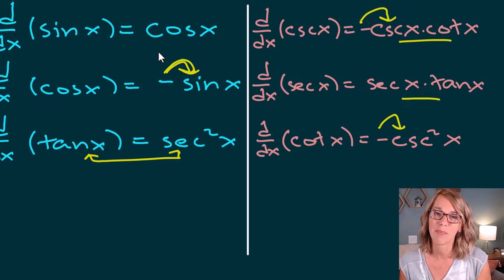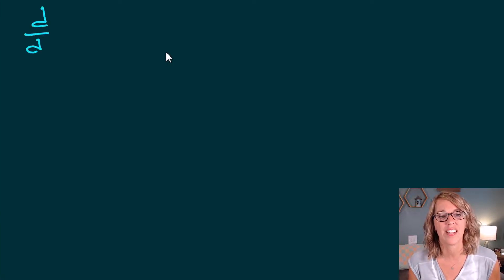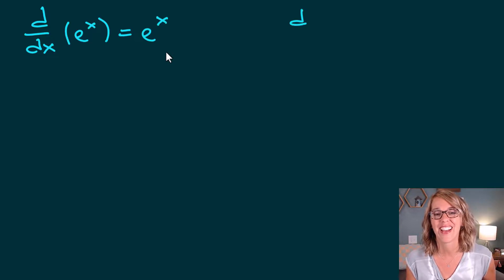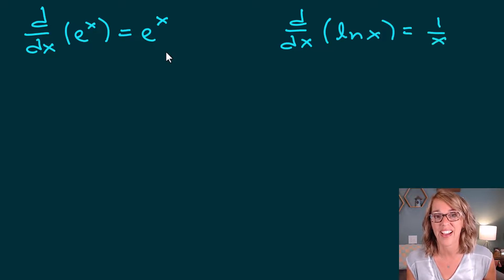Next, let's look at exponentials and logs. I'm going to show you three exponential and log derivatives. First, the derivative of e to the x — my very favorite derivative — because it is just itself: e to the x. Next, the derivative of the natural log of x is equal to 1 over x.